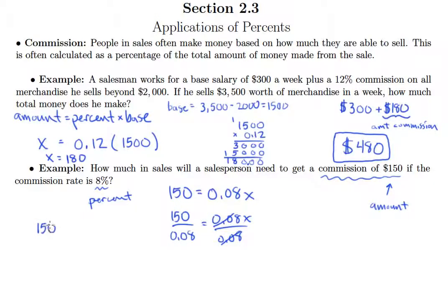So that leads us to this division problem here, which of course we're going to have to make an adjustment to. We need to make that decimal point in 0.08 move to the right two places. Of course, we do the same thing in 150. So the division problem that we really need to do here is 15,000 divided by 8.